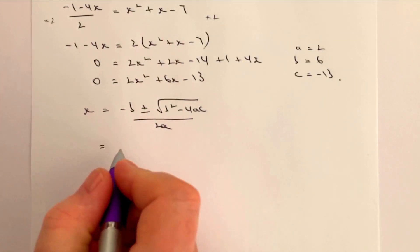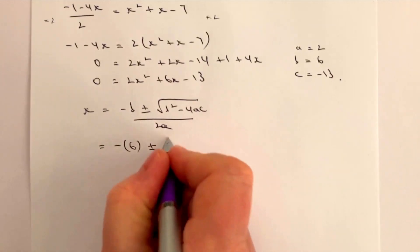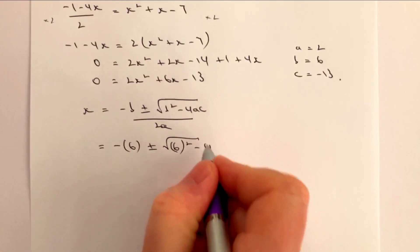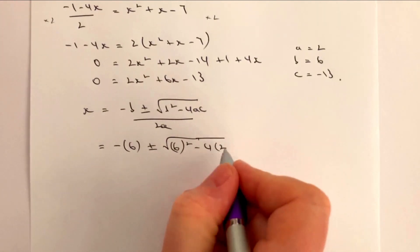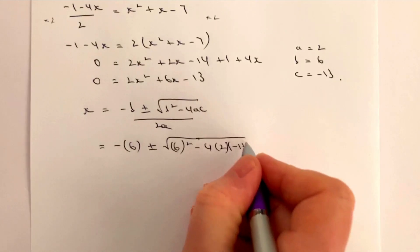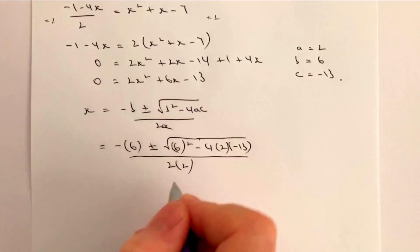So all I'm going to do as I did before is substitute with brackets plus or minus square roots of that's going to be 6 squared minus 4 times a which is 2 and c which is minus 13, and that's all divisible by 2 times 2 which is 4.